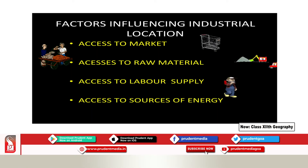There are certain factors which are responsible for the location of industry. The first factor is access to market. Market is a place where buying and selling of goods takes place, and it is the final destination for industries. Market plays a very important role in the localization of industries, so industries are always located near where the market is available, which helps them gain maximum profit.